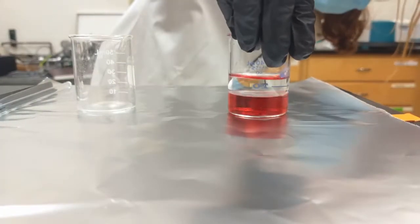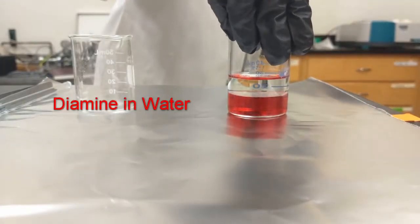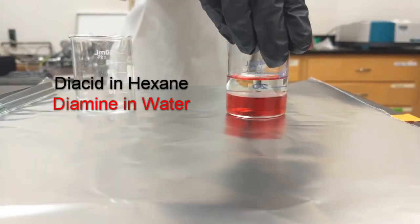Now you can see that we have two layers. The bottom layer is the red water layer and the top layer is the clear hexane layer.